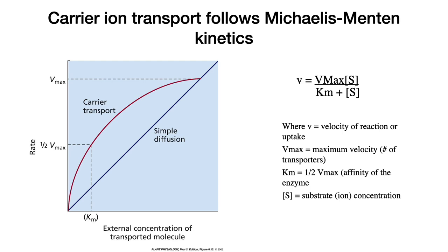This was before we knew about any of the proteins in the membrane, and he discovered this by understanding what we call Michaelis-Menten kinetics, which are designed for enzyme kinetics. He noticed that, as in this red line, the transport of an ion into a cell or a root had this curvilinear response. If it had been by simple diffusion, it would be linear, but it's this curvilinear response. And this curve fit Michaelis-Menten kinetics, described by the equation V equals V max times the substrate concentration S, divided by the Km, or Michaelis-Menten constant, plus the substrate concentration. V stands for the velocity of the reaction, or in this case, ion uptake.